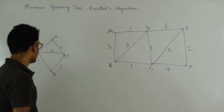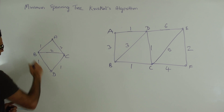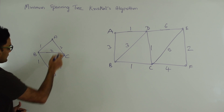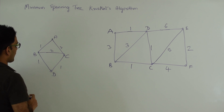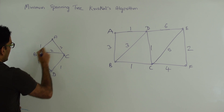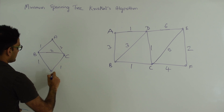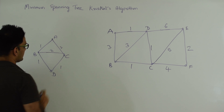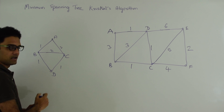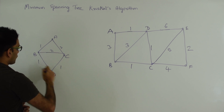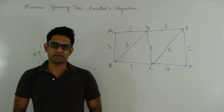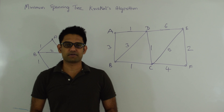So if you look at this example here, the minimum spanning tree for this graph will consist of three edges: AB, BC, and DC. So we have four vertices, three edges, and all the four vertices are connected to each other to form a tree.